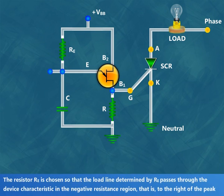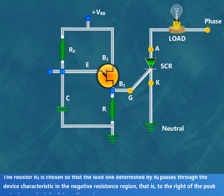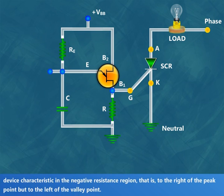The resistor RE is chosen so that the load line determined by RE passes through the device characteristic in the negative resistance region, that is, to the right of the peak point but to the left of the valley point.